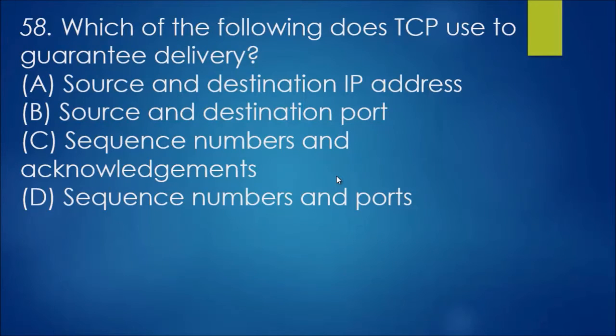Question 58: Which of the following does TCP use to guarantee delivery? The way TCP does this is through sequence numbers and acknowledgements. TCP assigns each message, also known as a segment, a sequence number, and then once they receive all of them in order, they acknowledge and let the sender know that it has been received.